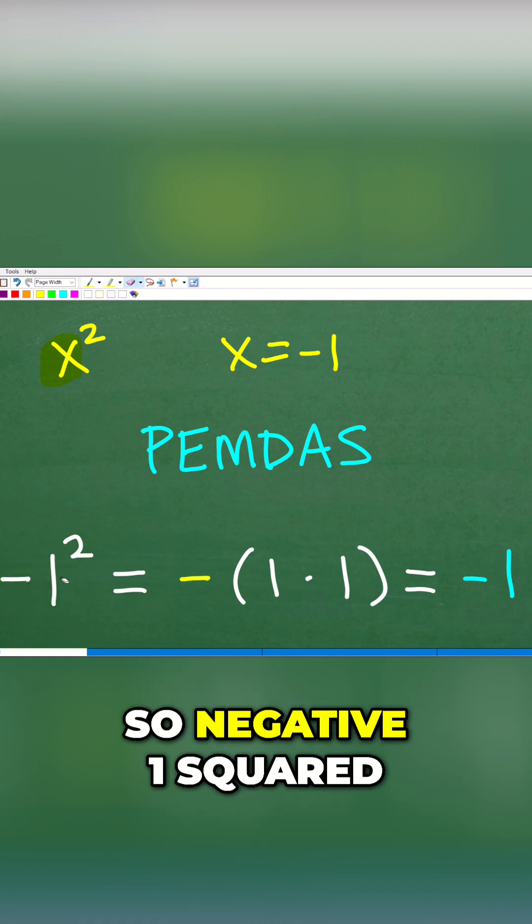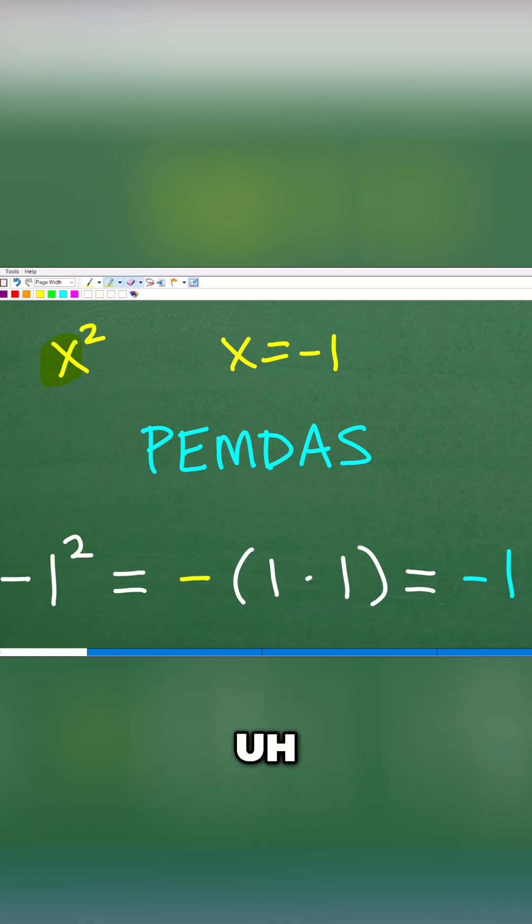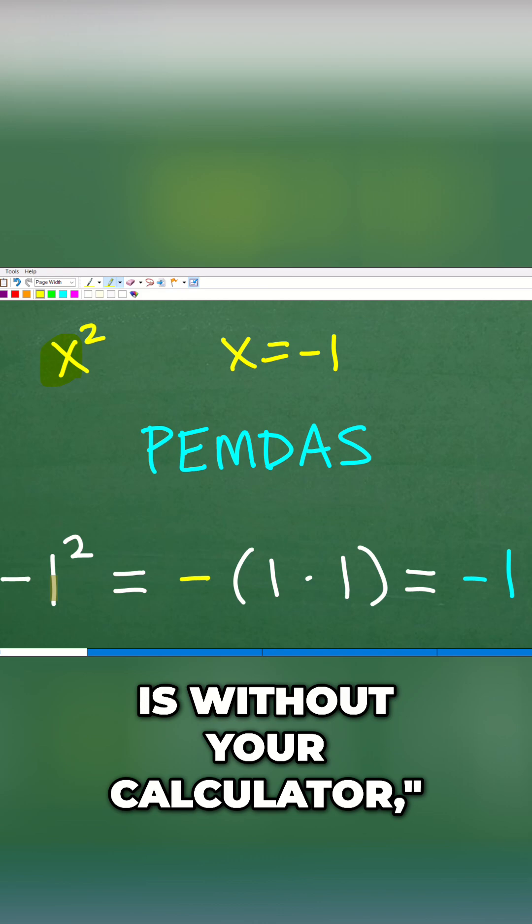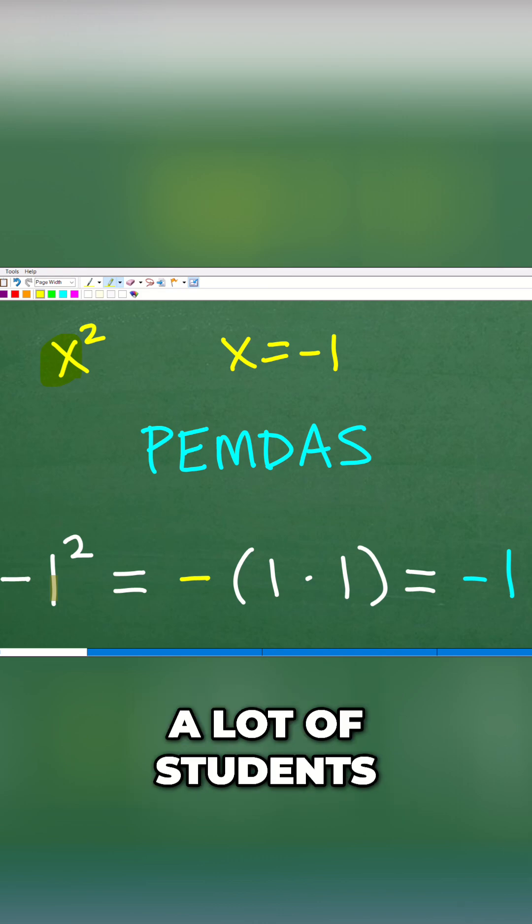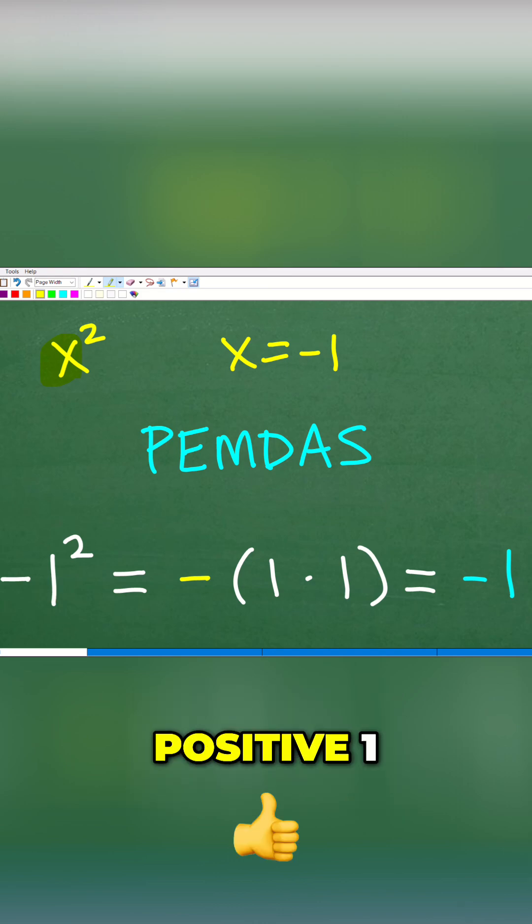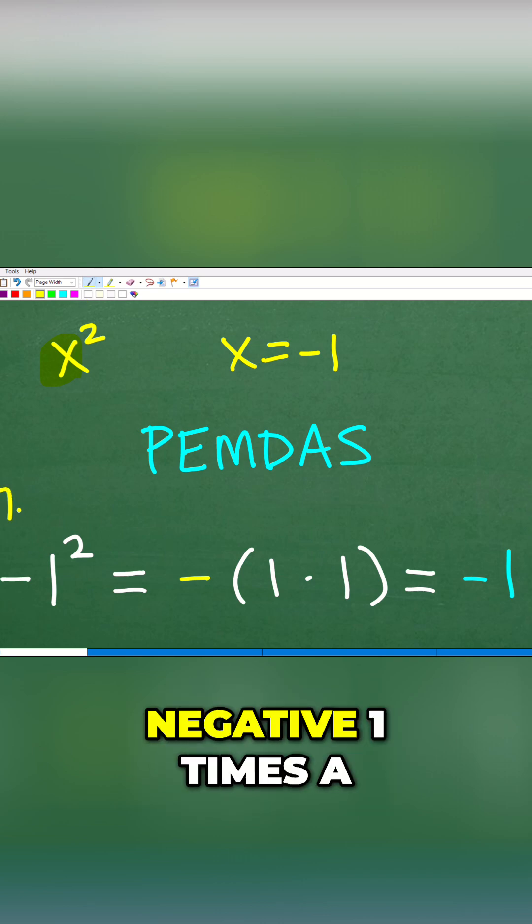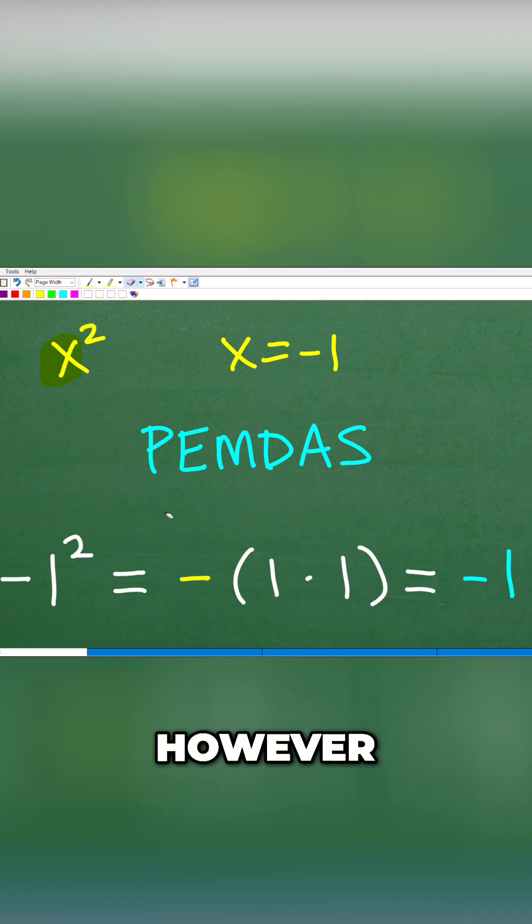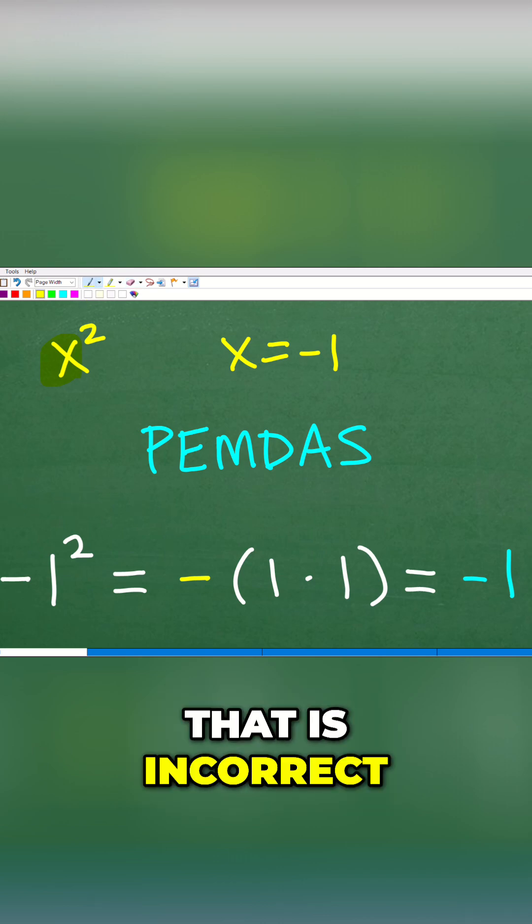So negative one squared, if I said, hey, figure out what this is without your calculator, a lot of students might give the answer positive one, because what they're thinking is this is going to be negative one times negative one. However, that is incorrect.